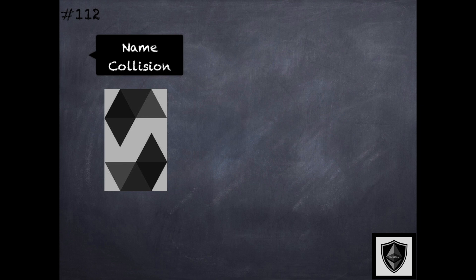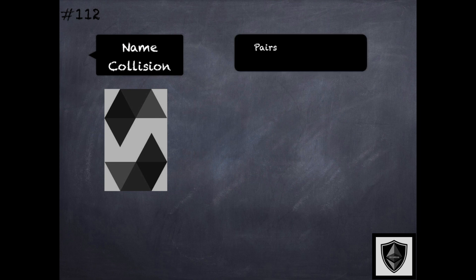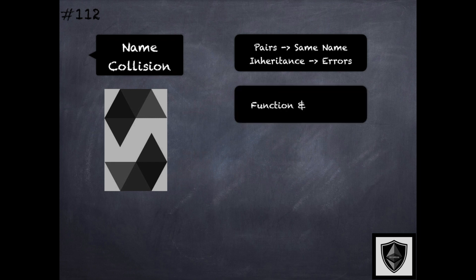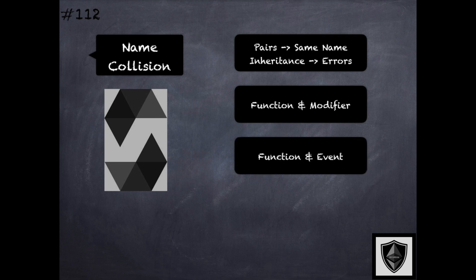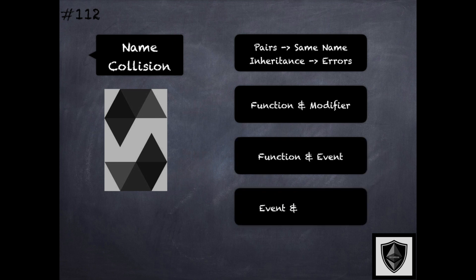Name collision is always an error in Solidity. It is an error when any one of the following pairs in a contract have the same name due to inheritance: a function and a modifier cannot have the same names, a function and an event cannot have the same name, and an event and a modifier also cannot have the same name. If this happens, it is a compile time error.